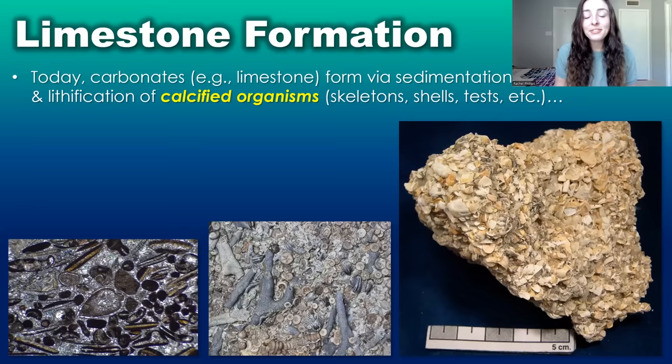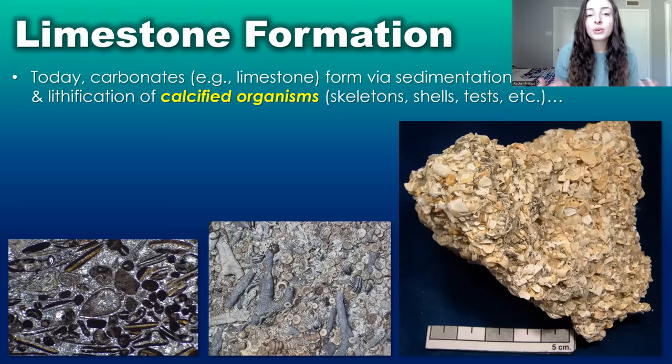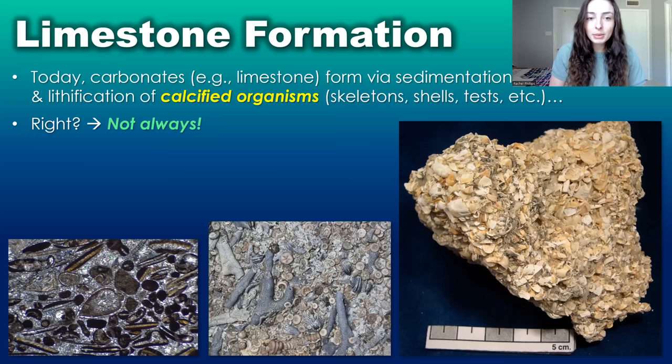If you don't know, modern calcium carbonate minerals like limestone or dolostone form via sedimentation and lithification of calcified organisms like skeletons, shells, tests, etc. Organisms make their hard parts out of calcium carbonate and their accumulation at the bottom of the seafloor ends up forming rocks called limestone. Limestone does form this way, especially on modern earth and ever since these types of animals evolved, but calcium carbonate minerals and the rocks that result can form without the need for life's assistance.